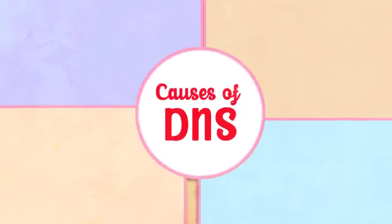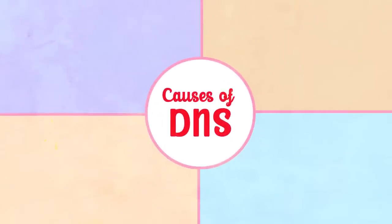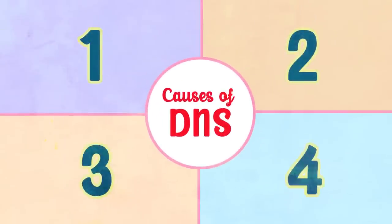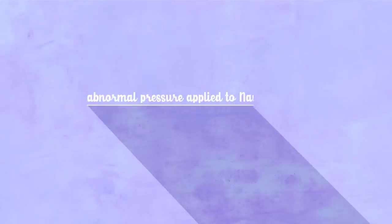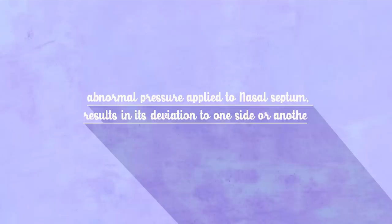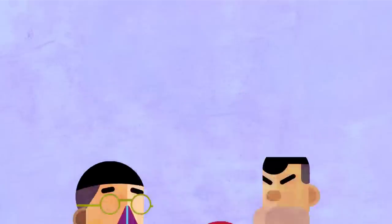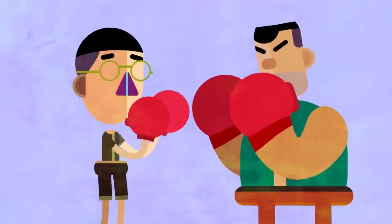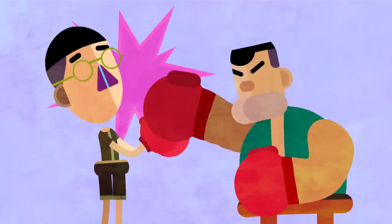Causes of DNS. There are four important causes. The first is trauma: any abnormal pressure applied to the nasal septum results in its deviation to one side or another. For example, being hit by a boxer on the nose.